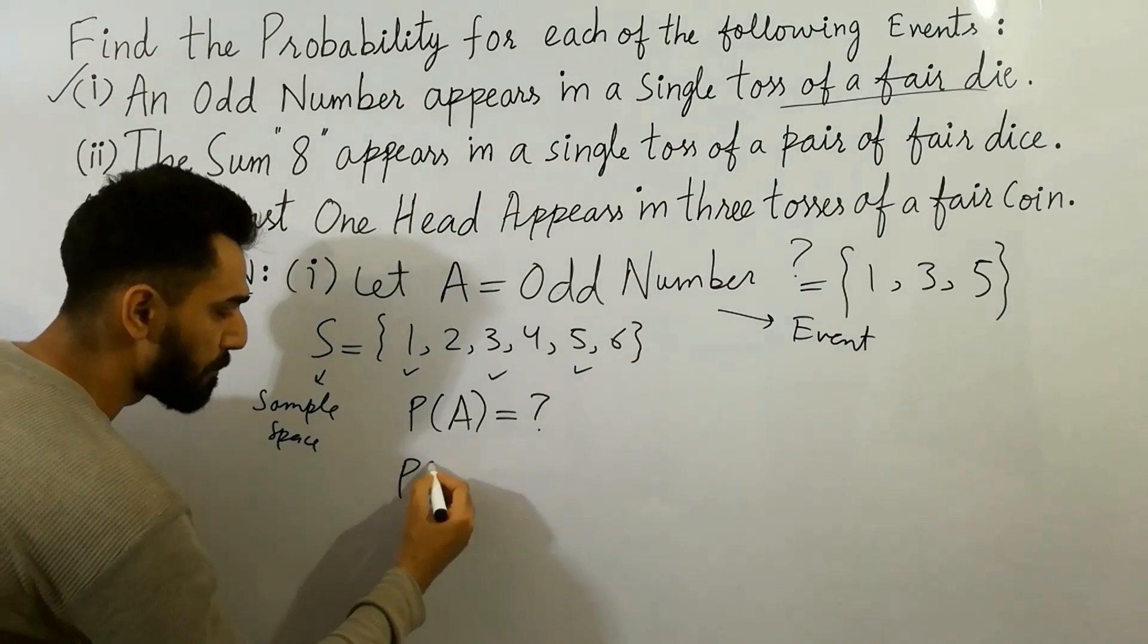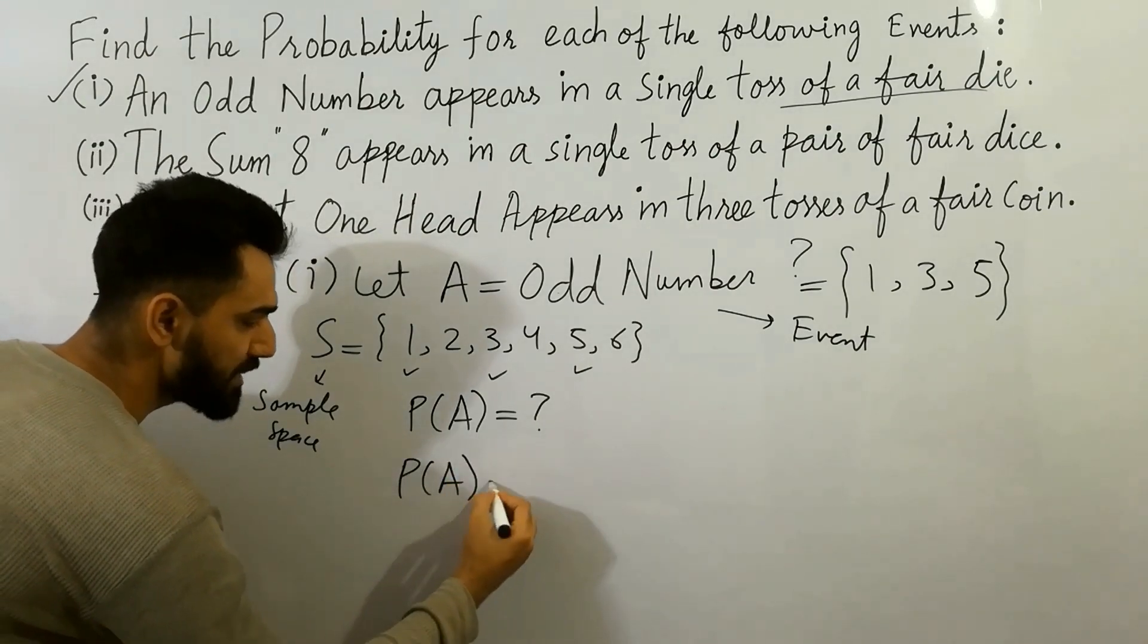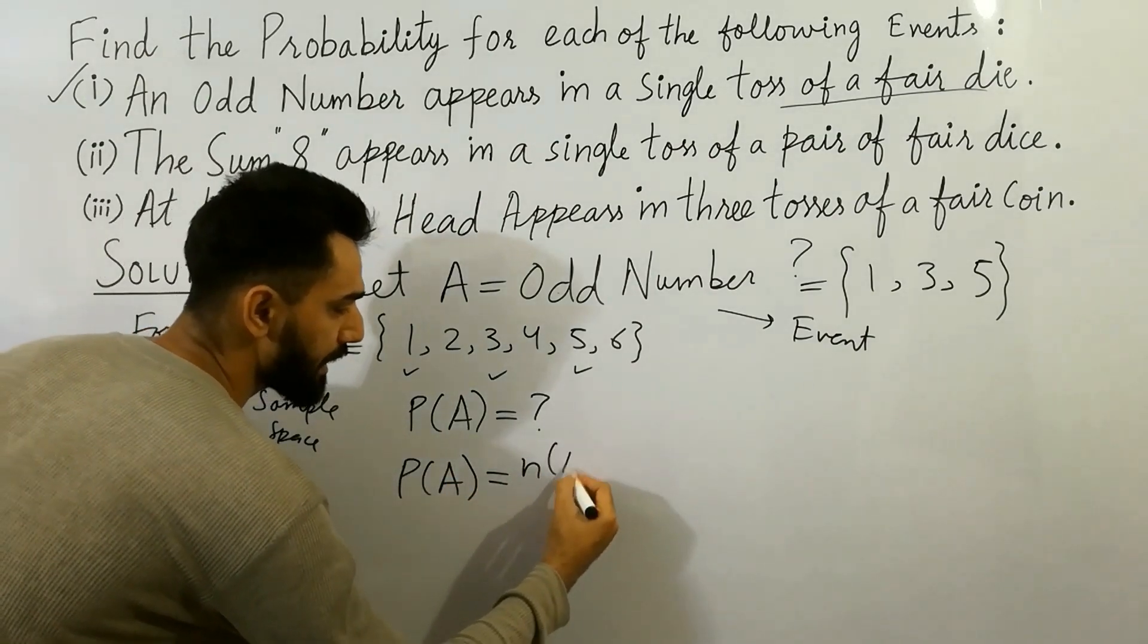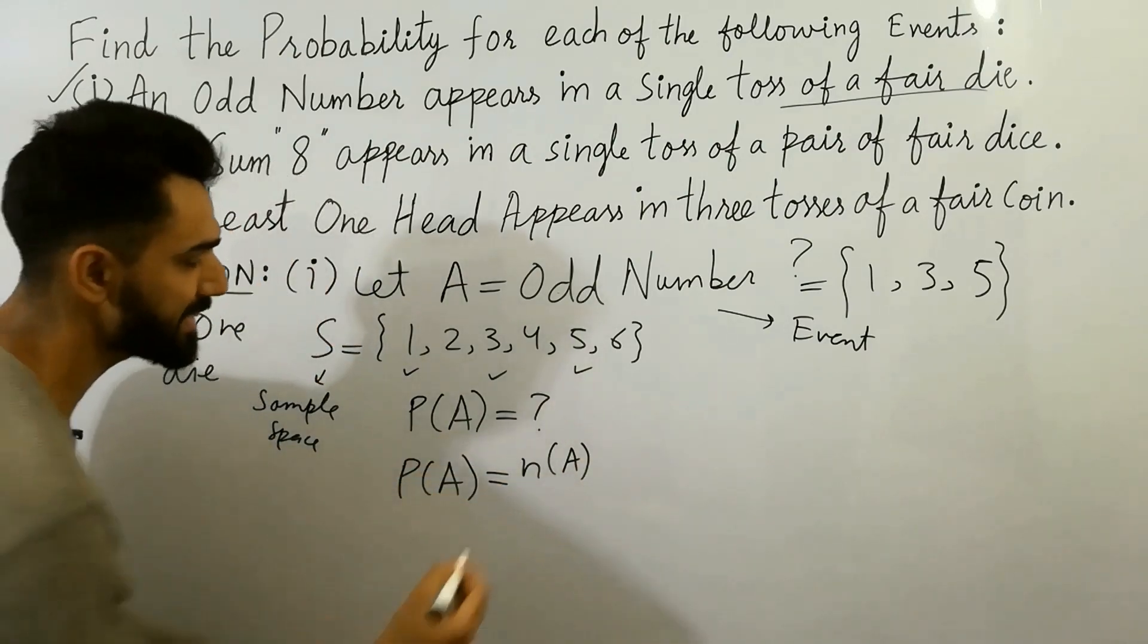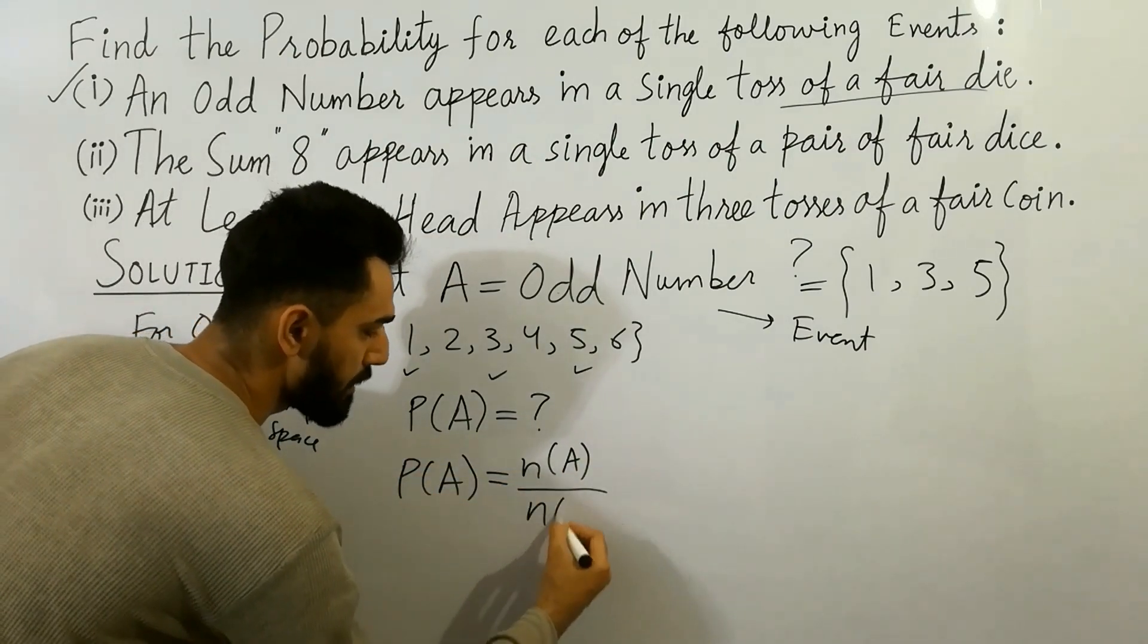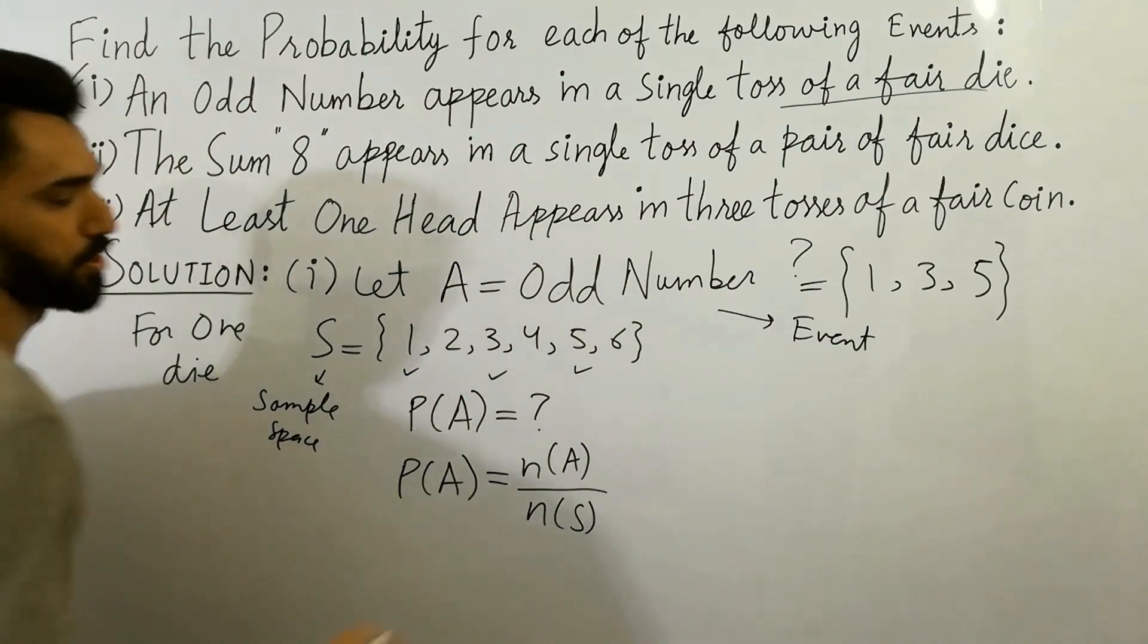So here, we know that probability of A is equal to number in A, number in event, divided by number in sample space.